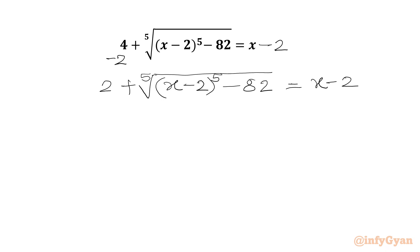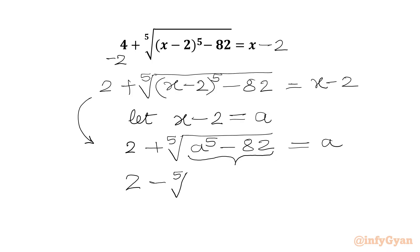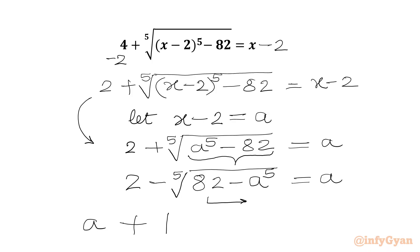Now we have x minus 2 on both sides, so let us assume x minus 2 equal to A. Our equation will become 2 plus fifth root of A power 5 minus 82 equal to A. Taking minus common from the radicand, we write 2 minus fifth root of (82 minus A power 5) equal to A, which rearranges to A plus fifth root of (82 minus A power 5) equal to 2.